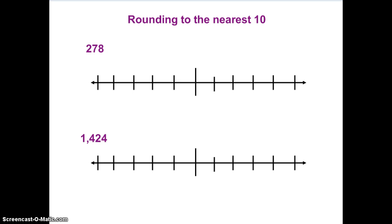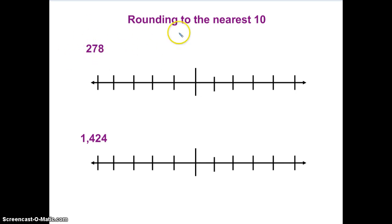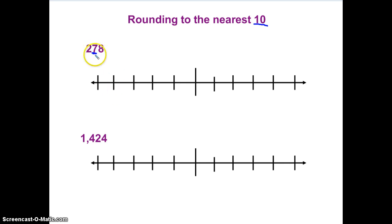Let's see how we do this. I have the number 278. The first thing you need to know is: what am I rounding to? So I'm rounding to the nearest ten — this is important. So where is my tens place here? Seven tens, seventy.